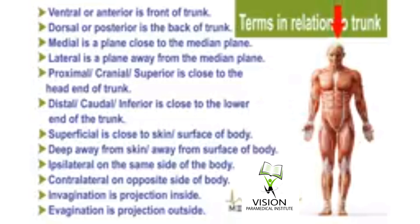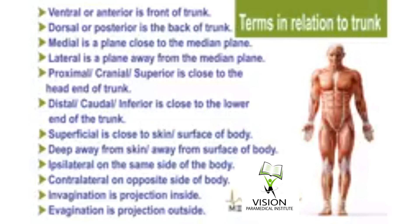Proximal, also called cranial or superior, is close to the head end of the trunk. Distal, also called caudal or inferior, is close to the lower end of the trunk. Superficial means close to the skin or towards the surface of the body. Deep means away from the skin or away from the surface of the body. Ipsilateral means on the same side of the body, while contralateral means on the opposite side of the body.